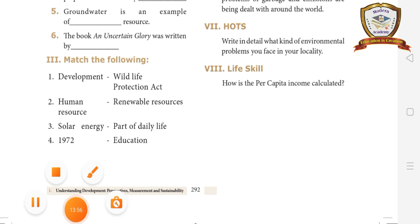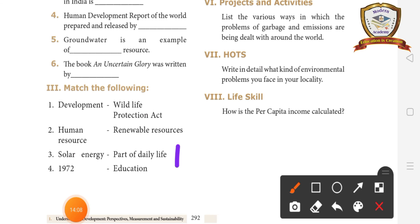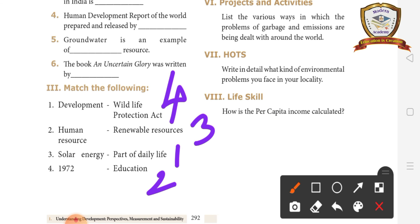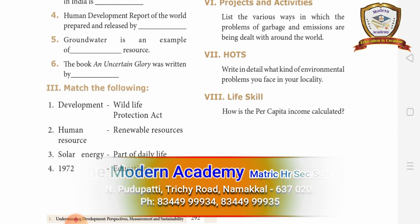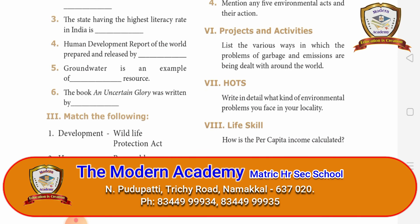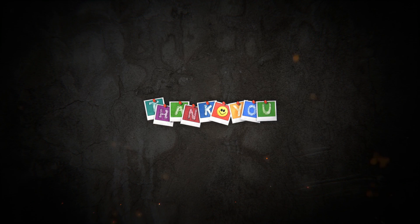Match the following: Development is a part of our daily life. Human resources relate to education. Solar power is a renewable resource. 1972 corresponds to the Wildlife Protection Act. For the remaining book back questions, detailed answers will be provided in the study material for reference. Economics Unit 1 lesson is now completed. Thank you, students.